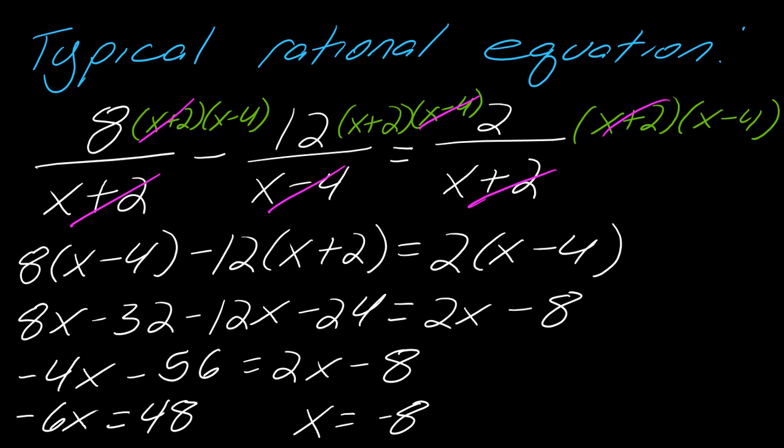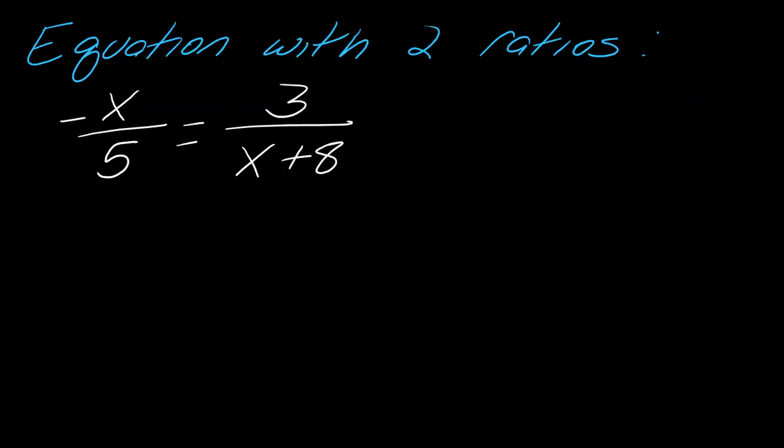All right, so that's the typical rational equation. Now I want to take a look at an equation with two ratios. How is this different? Why would I cross multiply? But look, forget about cross multiplying for a second. If I wanted to solve this, this is still rational equations.